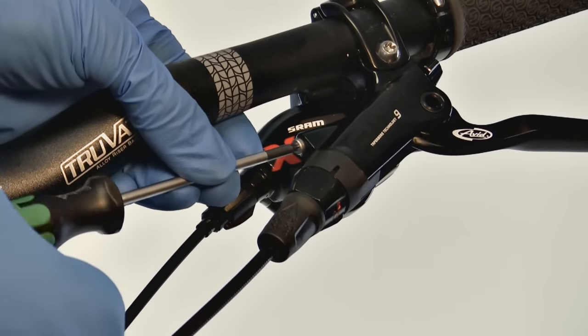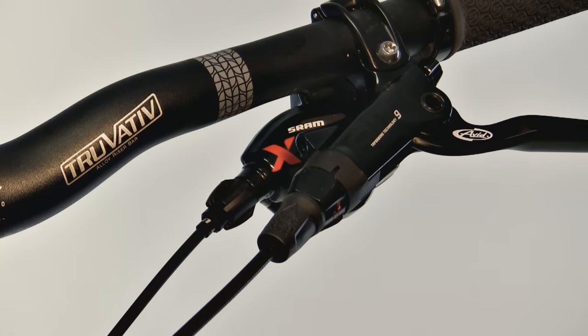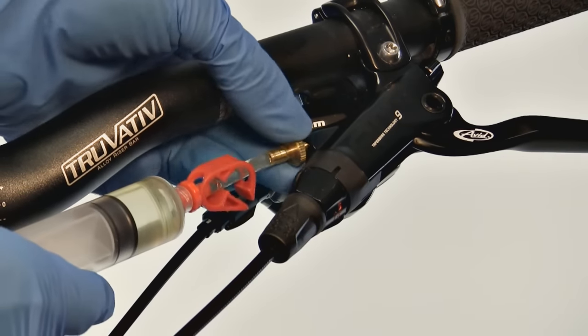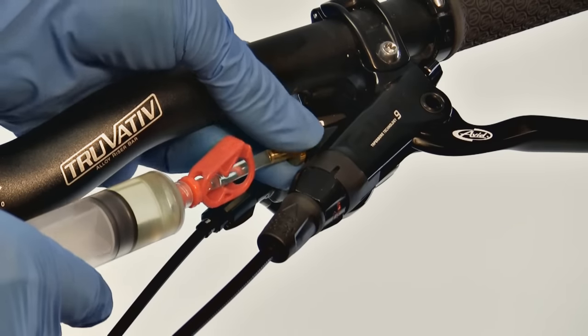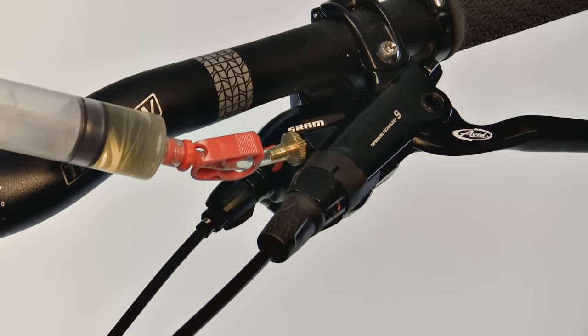Use a T10 Torx to remove the lever bleed port screw. Make sure the fluid in the other syringe is pushed all the way to the tip with no air gap. Then thread it into the lever bleed port. A small amount of brake fluid may drip from the bleed port screw. This is normal.